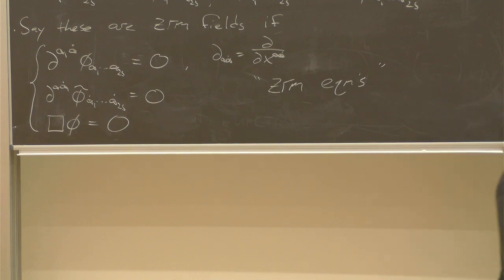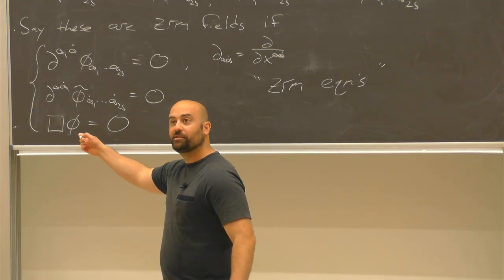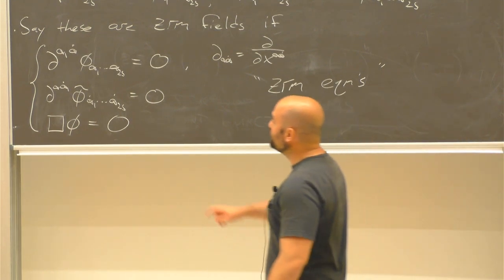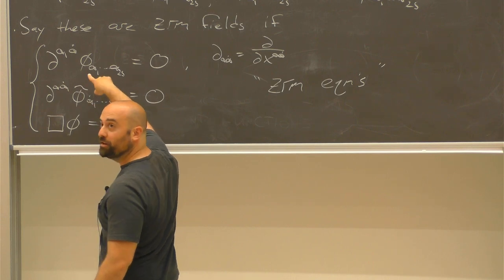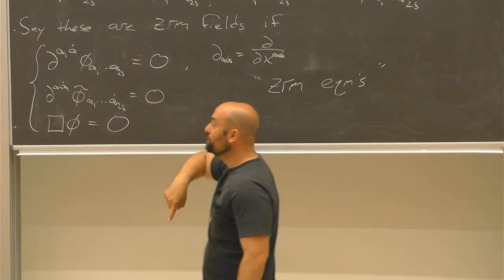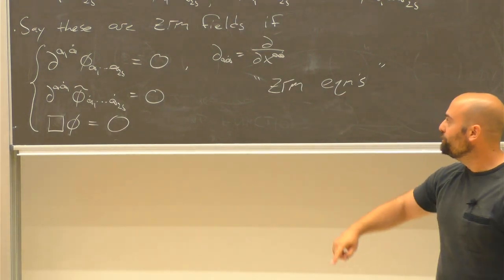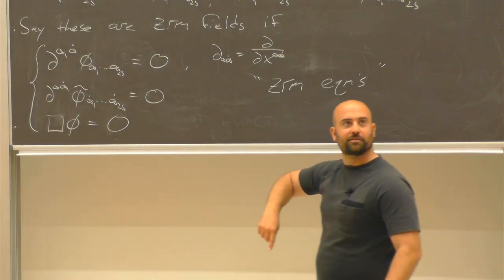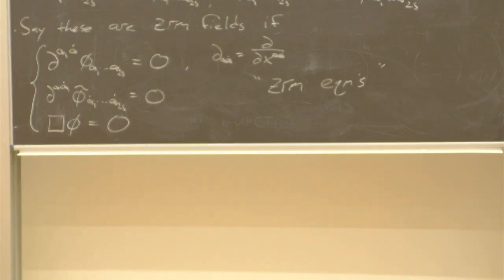Why should you care about such fields? When S equals zero these are just massless free scalars. When S equals one with just one spinor index on the dotted or undotted field, these are the massless Weyl neutrino equations. But more generally, for any S, these are the massless free field equations for any massless free field. It's perhaps not immediately obvious why that's the case, so let's see why explicitly for S equal to one.